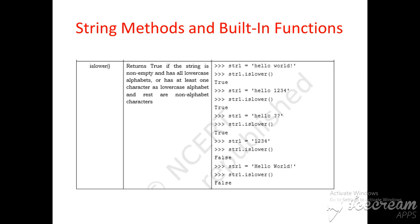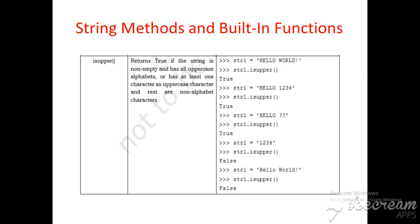Next, str1 is equal to 'hello world' with one special symbol. str1.islower() returns false. The reason is: it has at least one lowercase character and the rest are non-alphabets — but here it contains whitespace and all other letters, including whitespace and special symbols. That's why it returns false. This is the use of islower(). Next is isupper(), which is the opposite of islower().